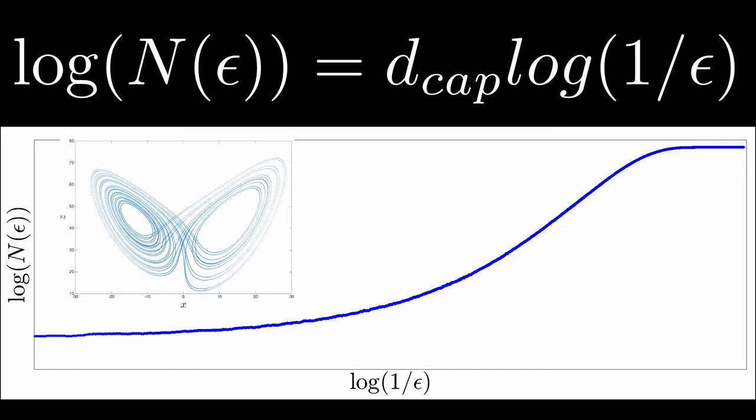Here, I have carried out this experiment for a chaotic trajectory of the Lorenz equations. On the x-axis, I have plotted the log of 1 over epsilon, and on the y-axis, I have plotted the log of the number of epsilon balls needed to cover the Lorenz attractor. As you can see, we can break this plot into three regions.